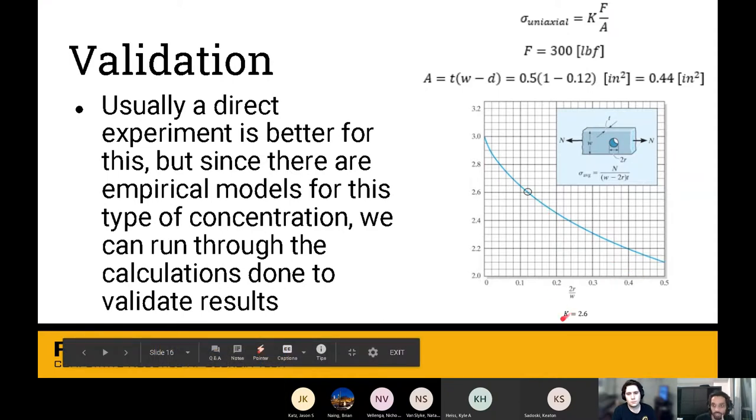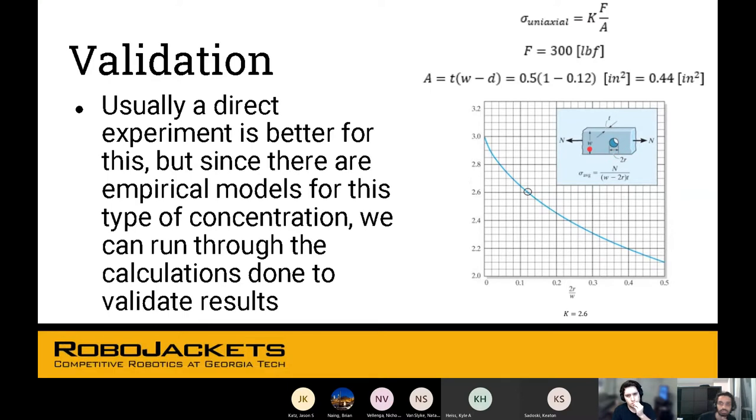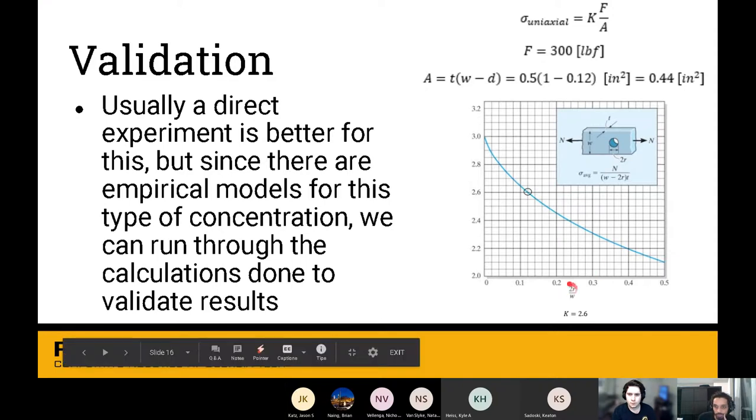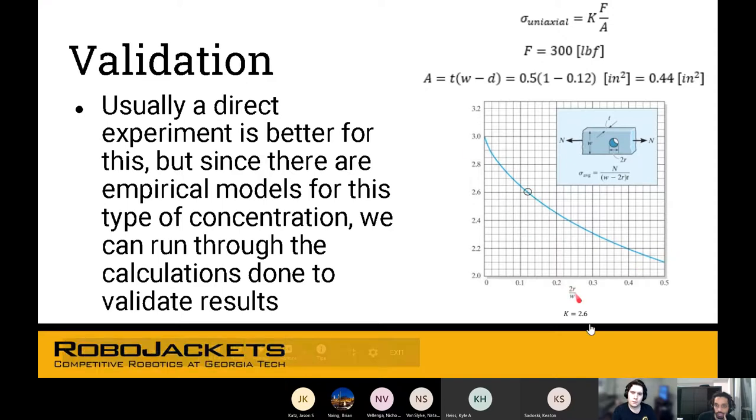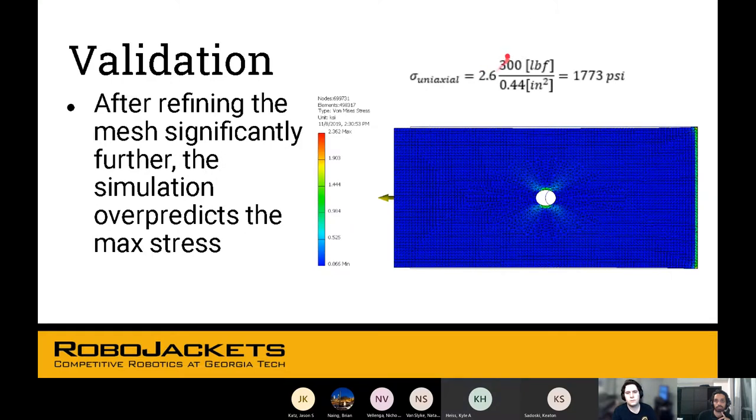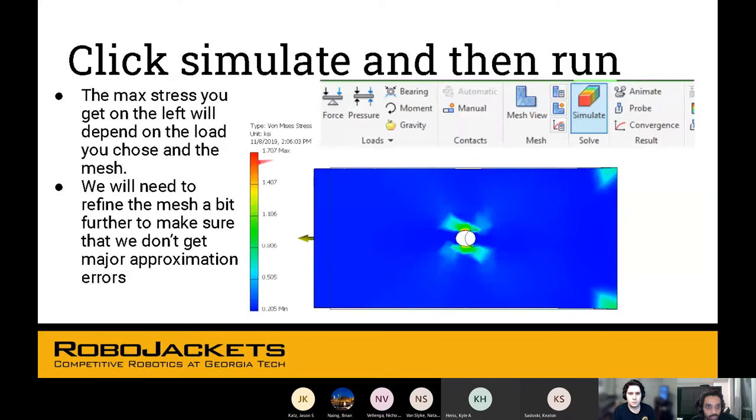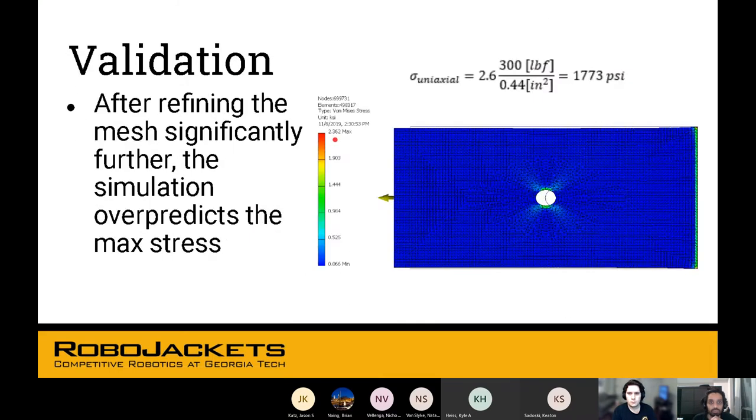On the bottom is 2R times W, R being the radius and W being the width. For different kinds of bars where the hole might be bigger or smaller or the bar might be wider or thinner, you use this ratio and find out what the K value should be from this graph. You have your F, this is something you decided when you were applying the load. You have the area, this is also something you decided when you created the part. After you refine your mesh, you'll find out that these numbers have changed. Now you're over-predicting the max stress. Back here we had 1.707 KSI, now we've got 2.362.